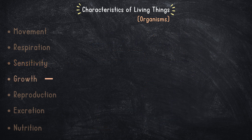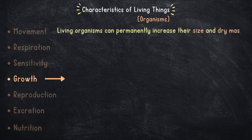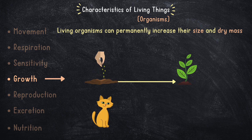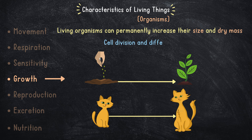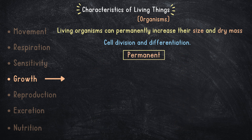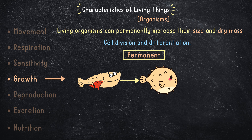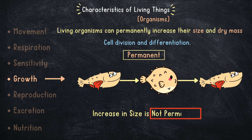Next, we have growth, which simply means living organisms can permanently increase their size and dry mass. For example, a tiny seed grows into a towering tree, and a baby kitten matures into a full-grown cat. This growth is driven by cell division and differentiation. Note the word permanent — organisms like pufferfish can get bigger for a short time to deter predators, but come back to normal when the threat is gone. This is not growth, as the increase in size is not permanent.